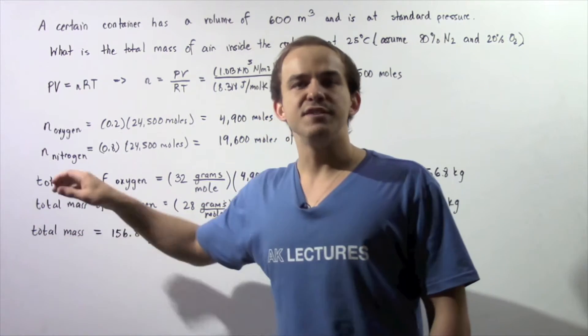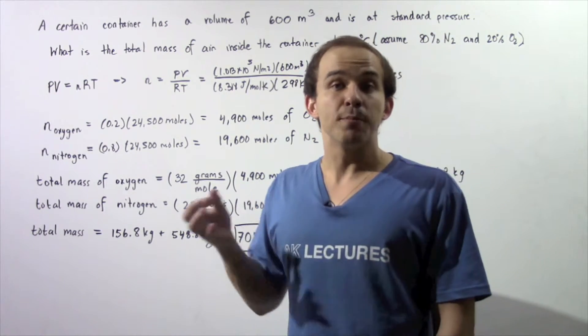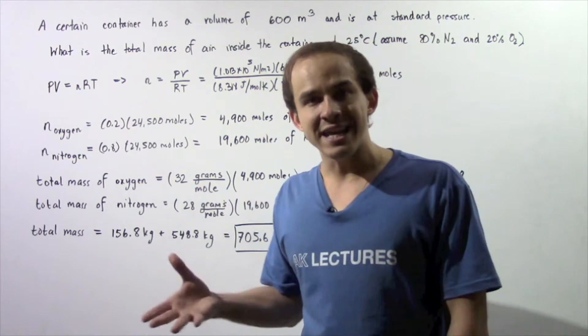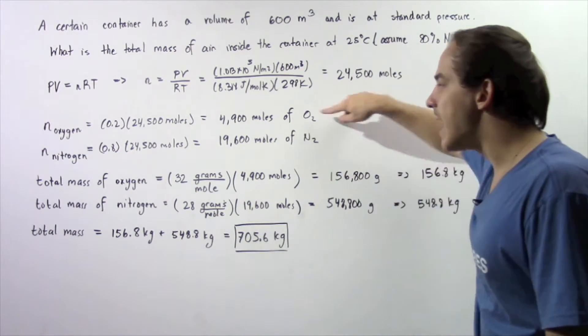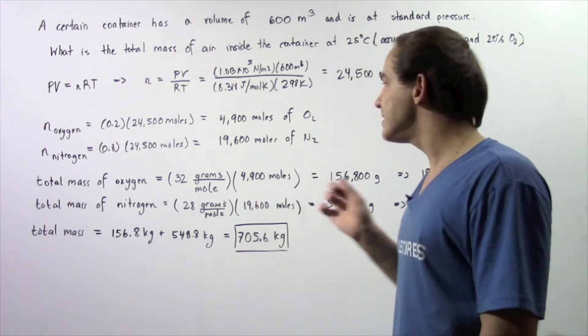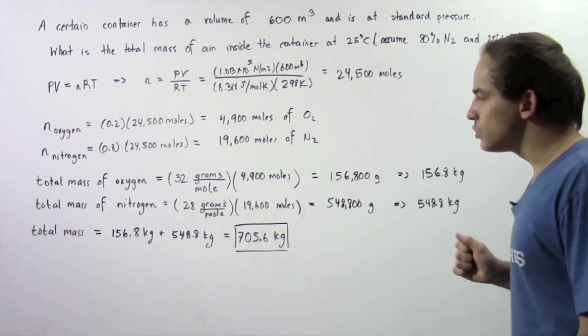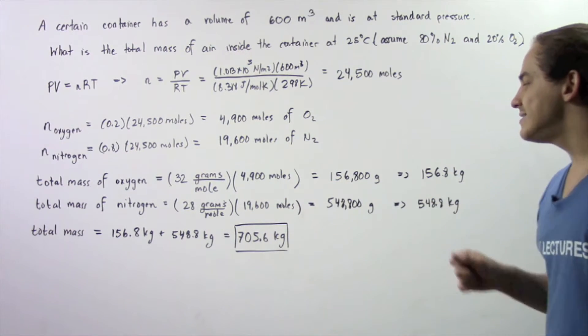Now, to find the total mass of nitrogen, we find the mass or the grams per mole of nitrogen, which is 14, multiply that by 2 because we want diatomic N. So 28 grams in 1 mole of diatomic nitrogen multiplied by 19,600 moles is equal to